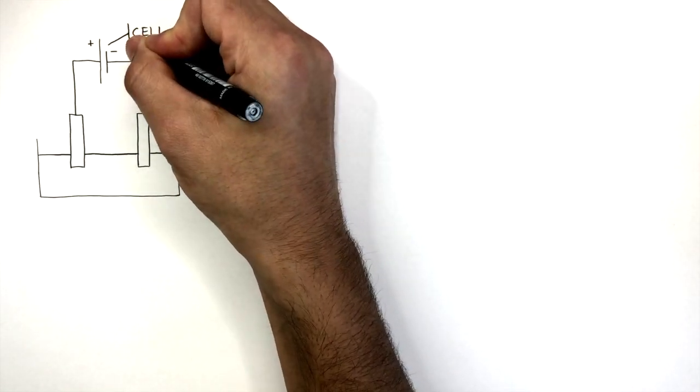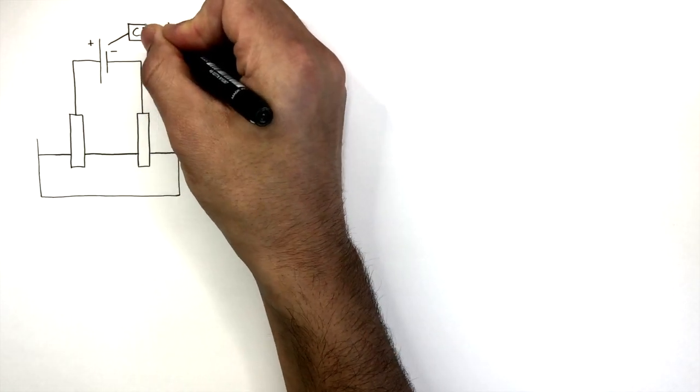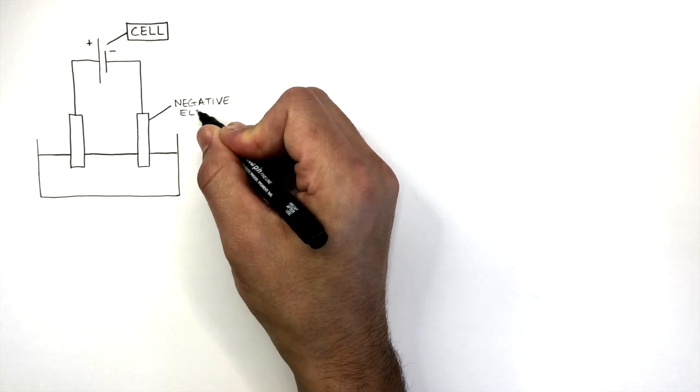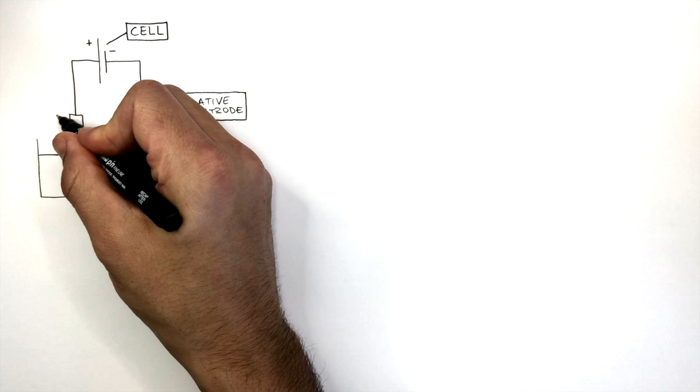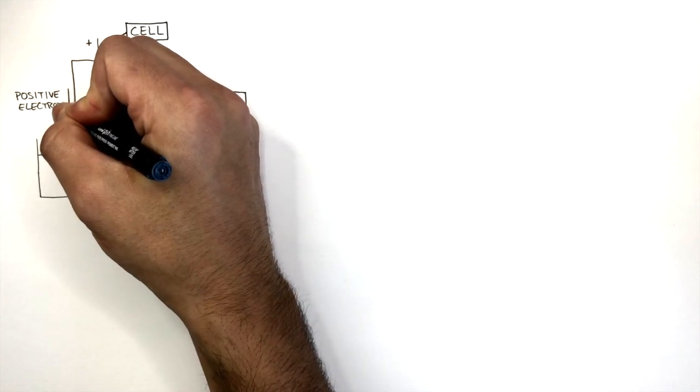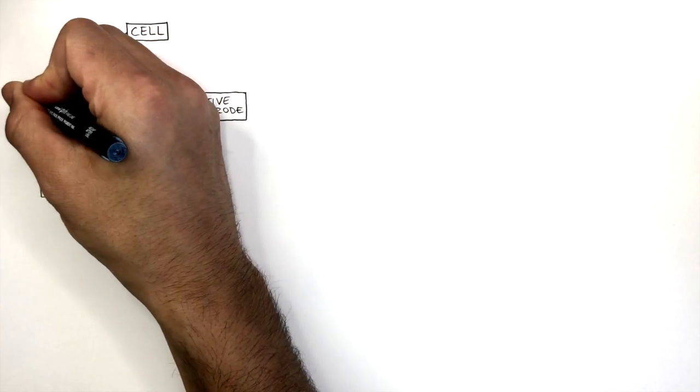This is the cell or it can also be a power pack. This is the negative electrode as it's connected to the negative terminal on the cell, and this is the positive electrode as it's connected to the positive terminal on the cell.